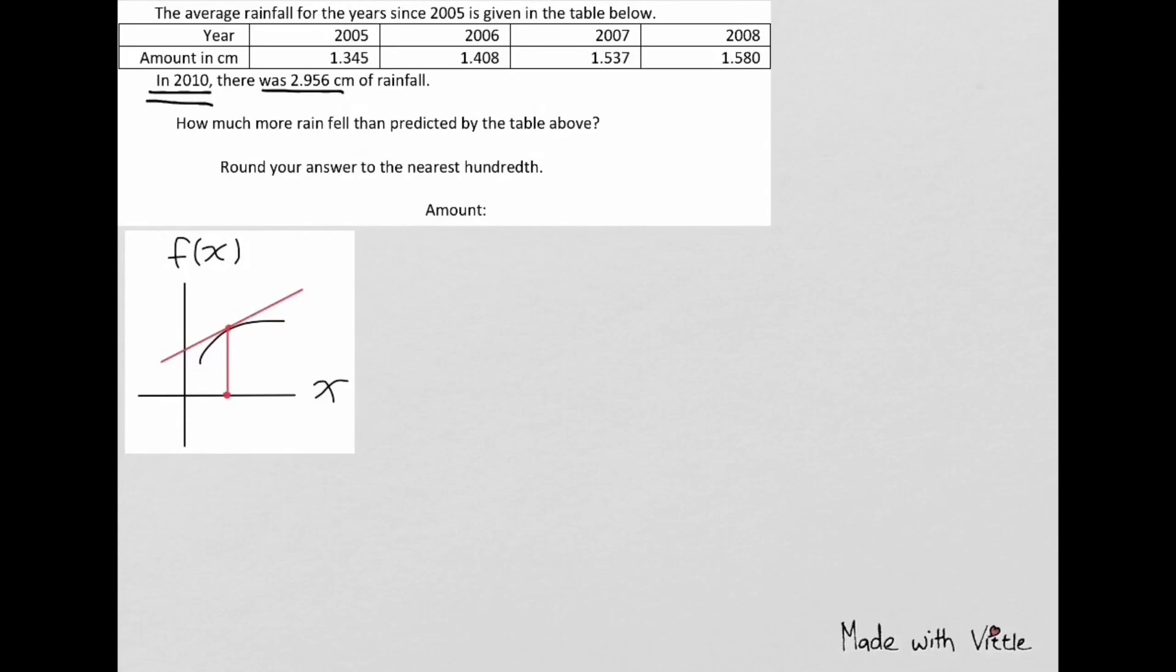In this graph we have a curve of a certain function and we have a value of x and the tangent line that is tangent to the curve at the x value. Here is the x value and this one is the tangent line.